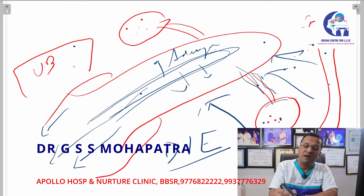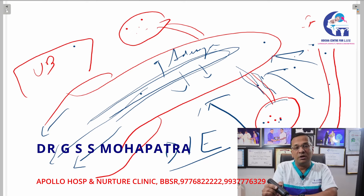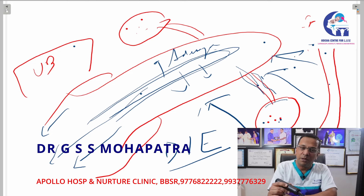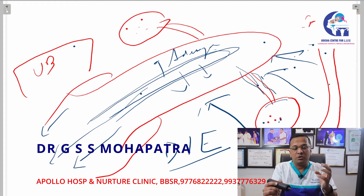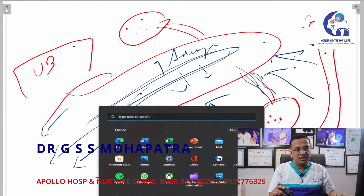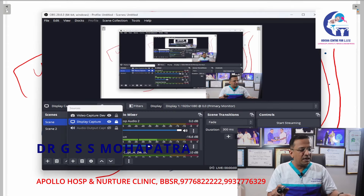When endometrial tissue deposits on the urinary bladder, it is called bladder endometriosis. The symptom of bladder endometriosis is that when the patient has her menses, she will have severe pain while passing urine.